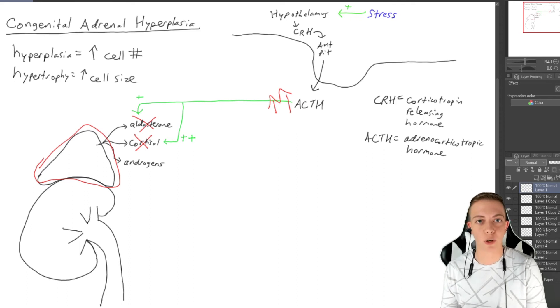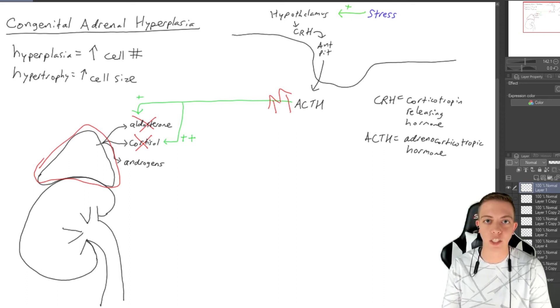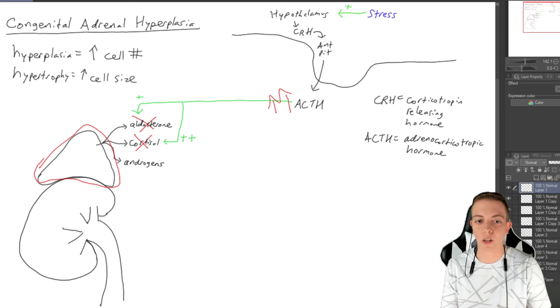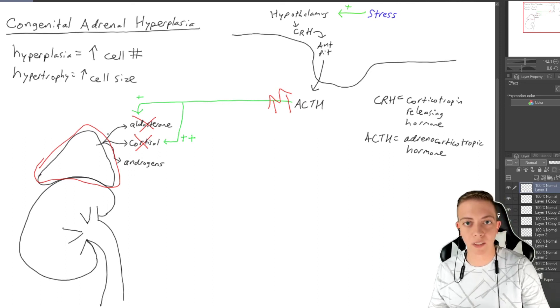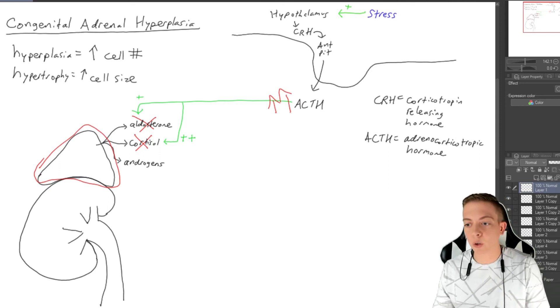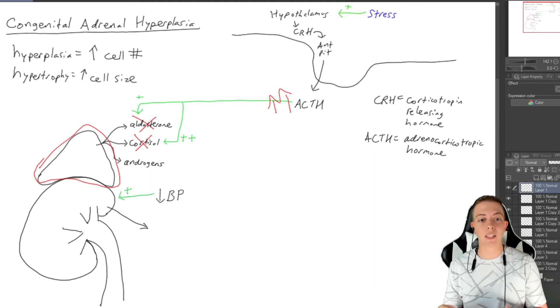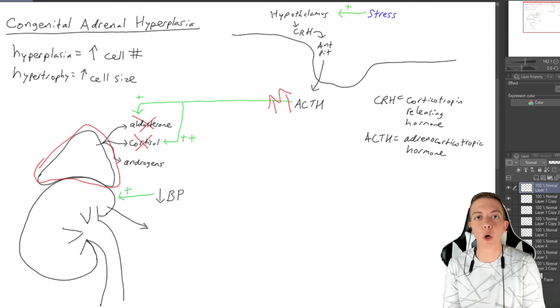I do also want to focus a little bit on aldosterone and what happens with this, because ACTH doesn't really stimulate aldosterone—aldosterone responds via a different pathway. Let's say that we have a decrease in blood pressure because if we have low aldosterone, we're going to have low blood pressure. This low blood pressure is going to tell the kidney that we need to raise our blood pressure, and so the kidney is going to release something called renin.